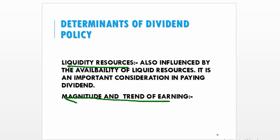Magnitude and trend of earnings: dividend depends on the quantum of profit. If the organization has sufficient profit and its profits are increasing, the company is in a better position to make payment of dividend on a regular basis. The company also has to see the past trend of earnings — if earnings fluctuate, the company has to adopt a conservative dividend policy; but if earnings are increasing at a steady rate, the company could follow a stable dividend policy.